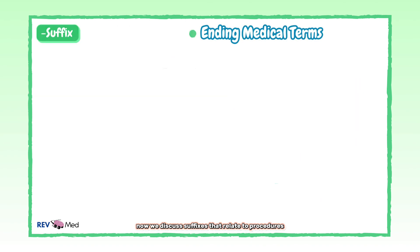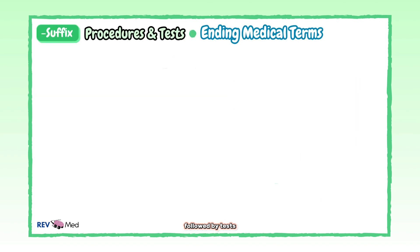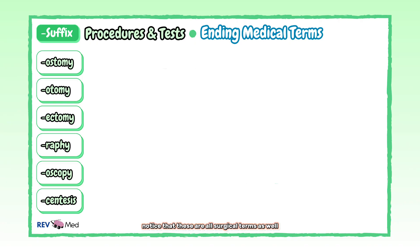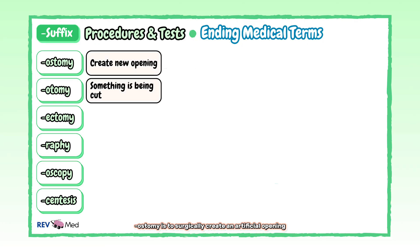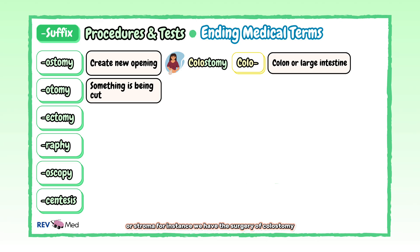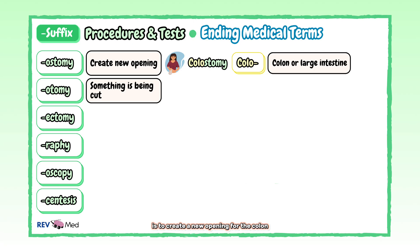Now we'll discuss suffixes that relate to procedures, followed by tests. Notice that these are all surgical terms as well. The first two we have are "-ostomy" and "-otomy". "-Ostomy" is to surgically create an artificial opening or stoma. For instance, we have the surgery of colostomy. You already see a previous root word — "colo" — which refers to the colon. So colostomy is to create a new opening for the colon to pass through the abdominal wall.